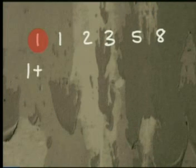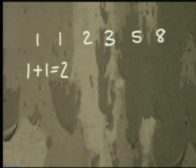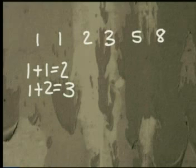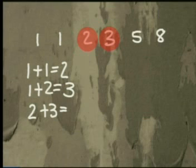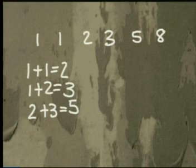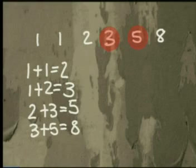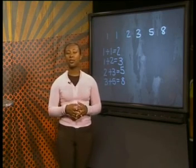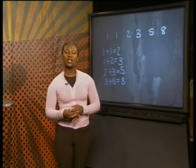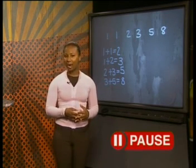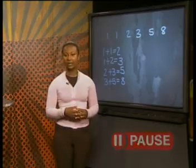Let me show you. If we add the two ones we get two. If we then add the two and the one before it we get three. Adding the three and the number before it, which is two, we get the next number in the sequence: five. If we continue with this pattern we can predict that the next number should be three plus five, which equals eight. So the sixth generation of bees will have eight bees in it.